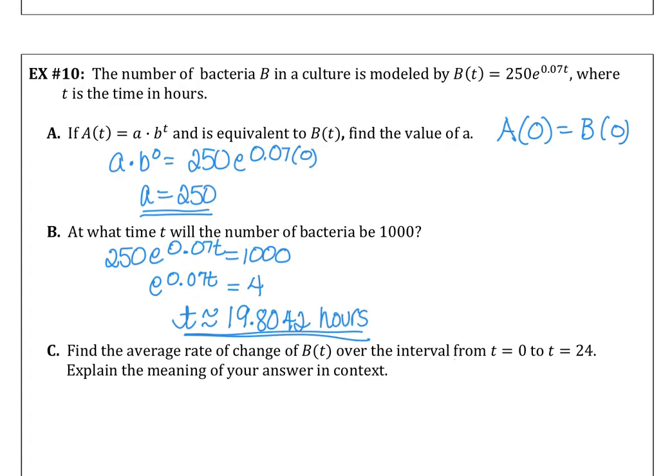So just real quickly what I did was I substituted 250, graphed that graph, and then in y2, graphed 1000, adjusted the window, and found that point of intersection where time was 19.8042.